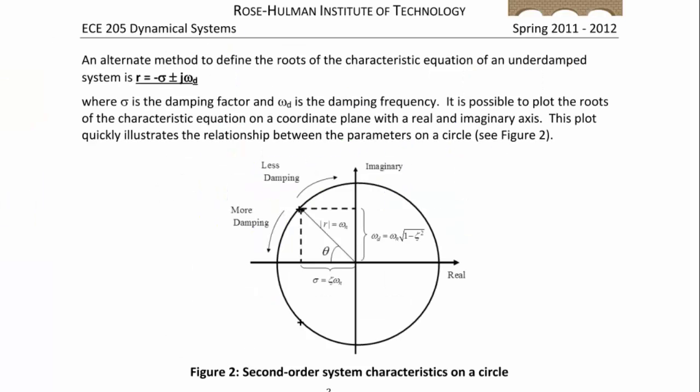An alternate method for representing the roots of the characteristic equation is r = −σ ± jωd, where σ is the damping factor and ωd is the damping frequency. It is possible to plot these roots on a coordinate plane with the real axis horizontal and the imaginary axis vertical. Since all these poles are negative, they are in the left half plane, indicating a stable system.